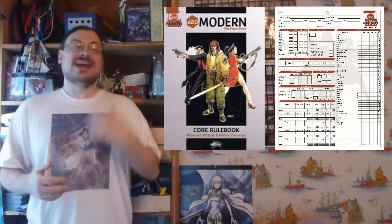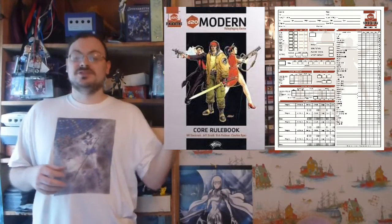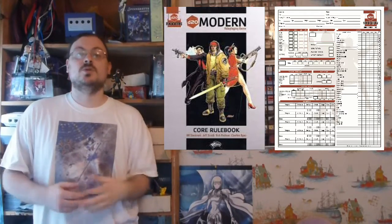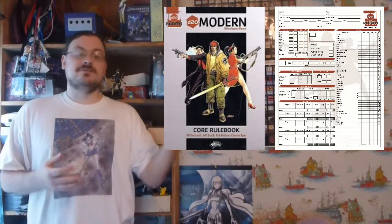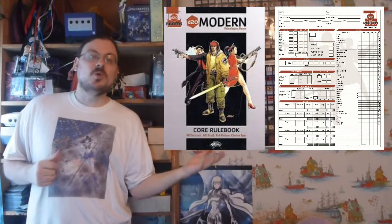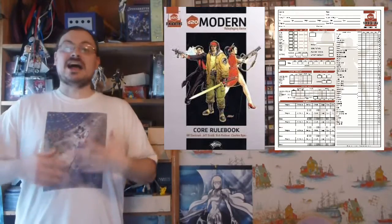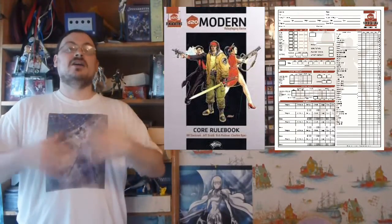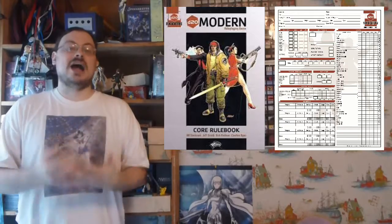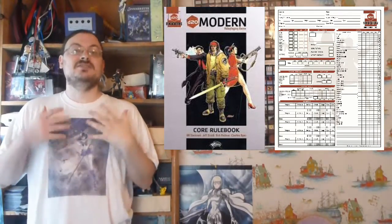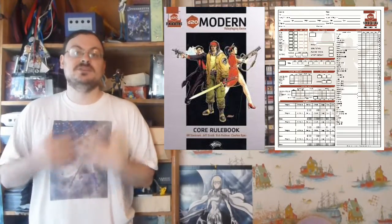Ability scores can change in D20 Modern. Poisons, diseases, and other special abilities can give temporary changes to ability scores. As you level up, every four levels starting at level four, you gain plus one to an ability score of your choice. Changing your age category — becoming older — often removes physical ability scores and adds mental ones. Now let's talk about the classes in D20 Modern. There are six base classes, and they are based upon each one of the ability scores.